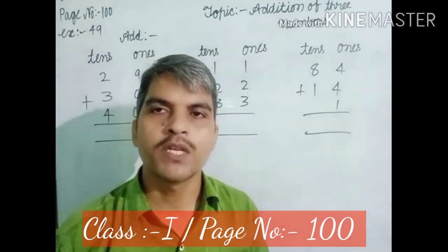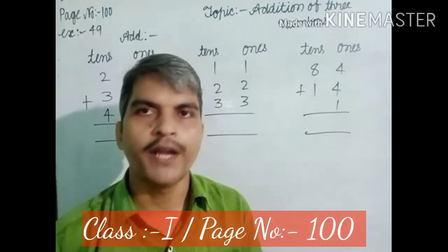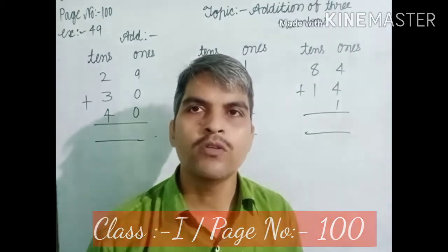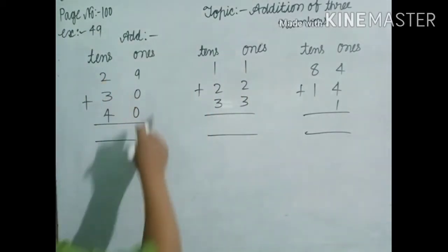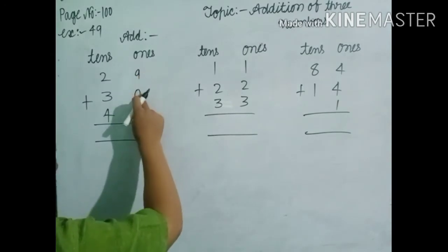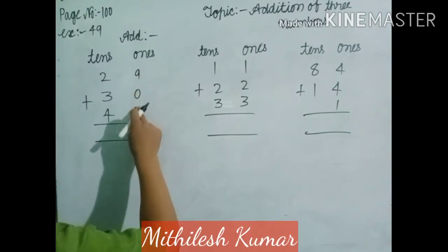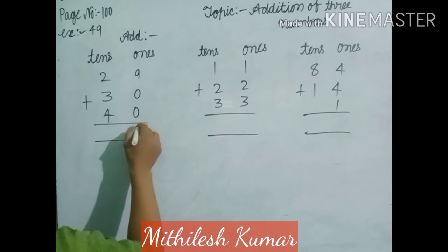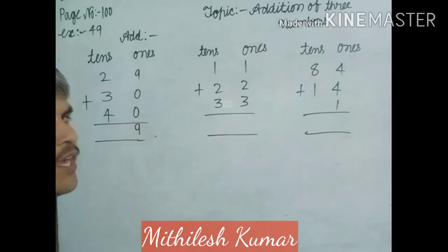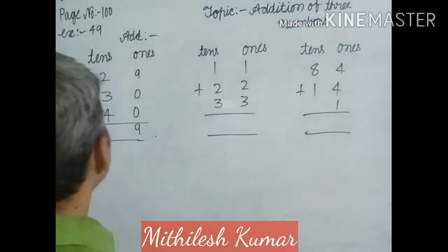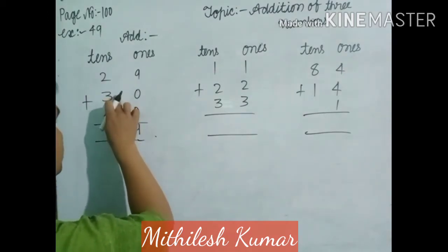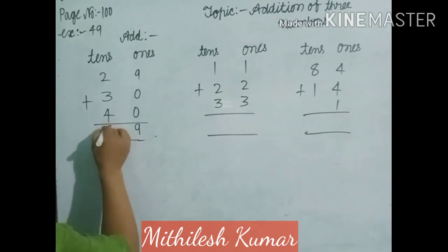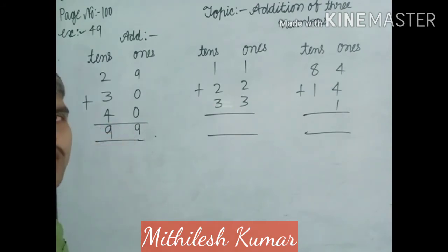In the 1s digit column: 9 plus 0 plus 0 equals 9. So, dear students, in the 1s digit column you write down 9. And going to the 10s digit column: 4 plus 3 is 7, plus 2 is 9. So dear students, your answer is found: 99 — 1s digit is 9 and 10s digit is 9.